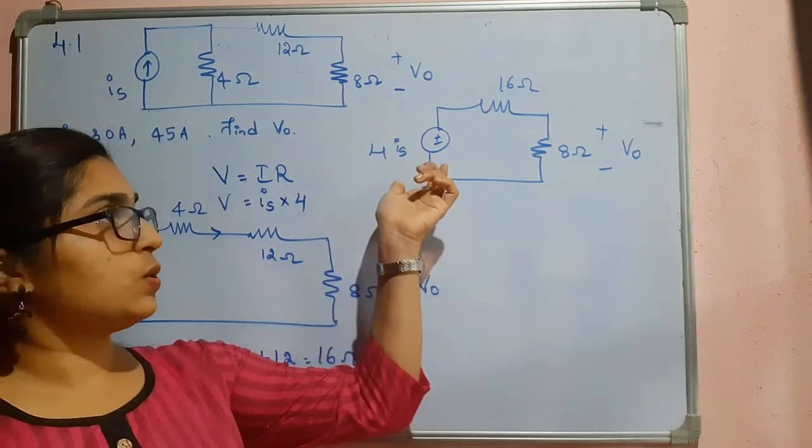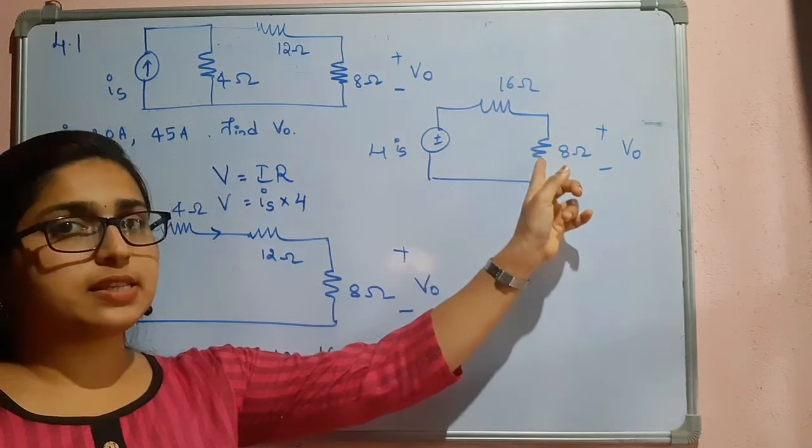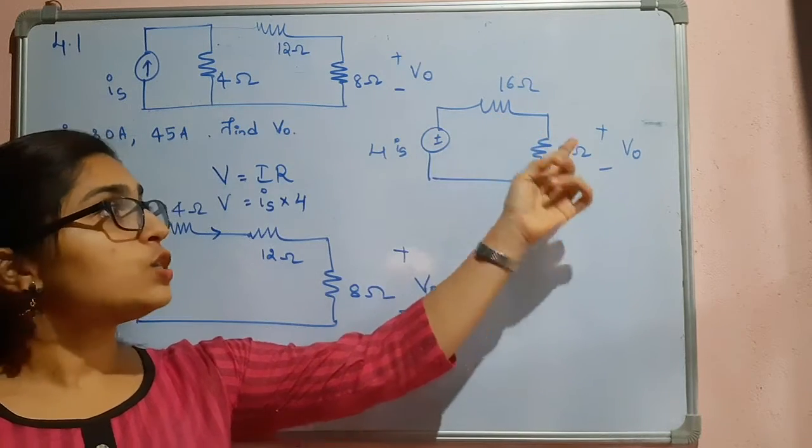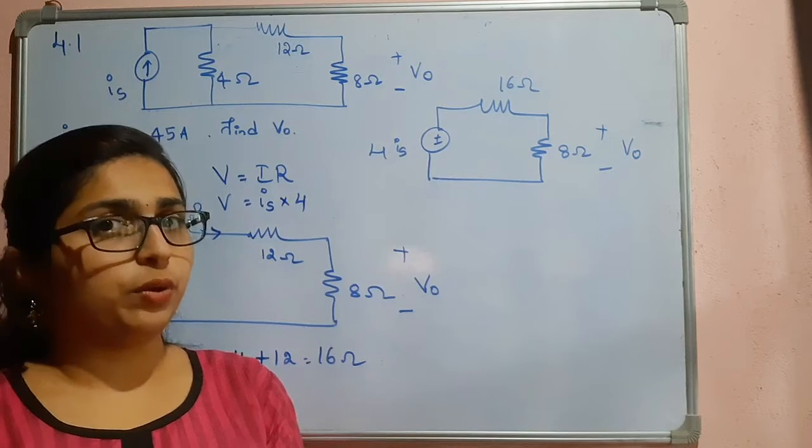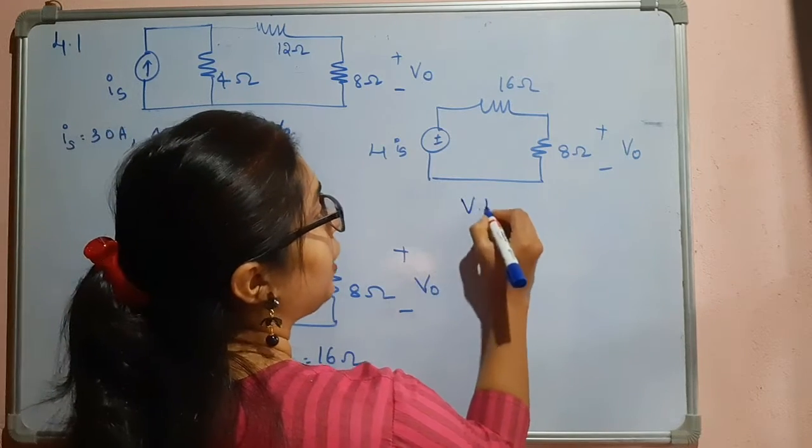This is a voltage source, here we have two resistances which are in series. So we can use voltage divider rule. So from voltage divider rule, what will be V0?